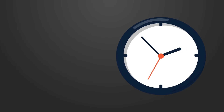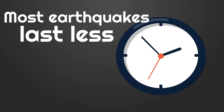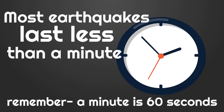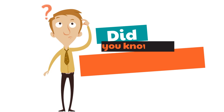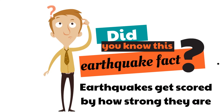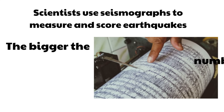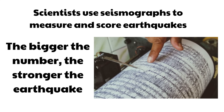While earthquakes are very powerful, they don't last that long. In fact, most earthquakes last less than a minute — and a minute is only 60 seconds. Scientists use seismographs to measure and score earthquakes. Earthquakes get their own number based on how strong they are. The bigger the number, the stronger the earthquake.